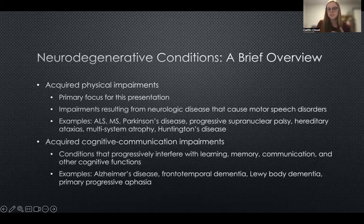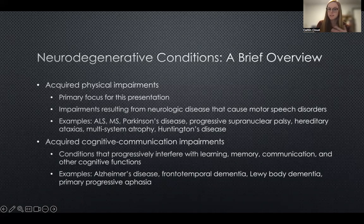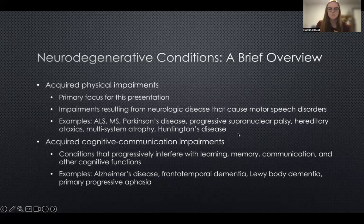Examples of acquired physical impairment conditions include ALS, multiple sclerosis, Parkinson's disease, progressive supranuclear palsy, hereditary ataxias, multi-system atrophy, and Huntington's disease. There are certainly more that aren't listed that are probably more rare, but these are some of the common conditions we see when working with adults who need AAC.